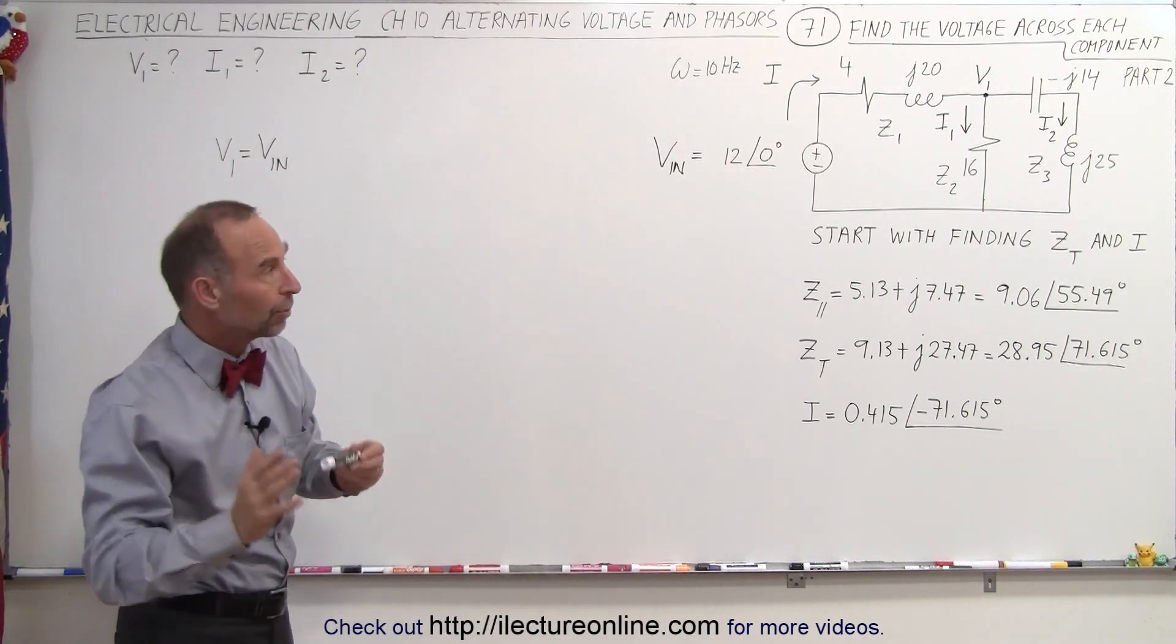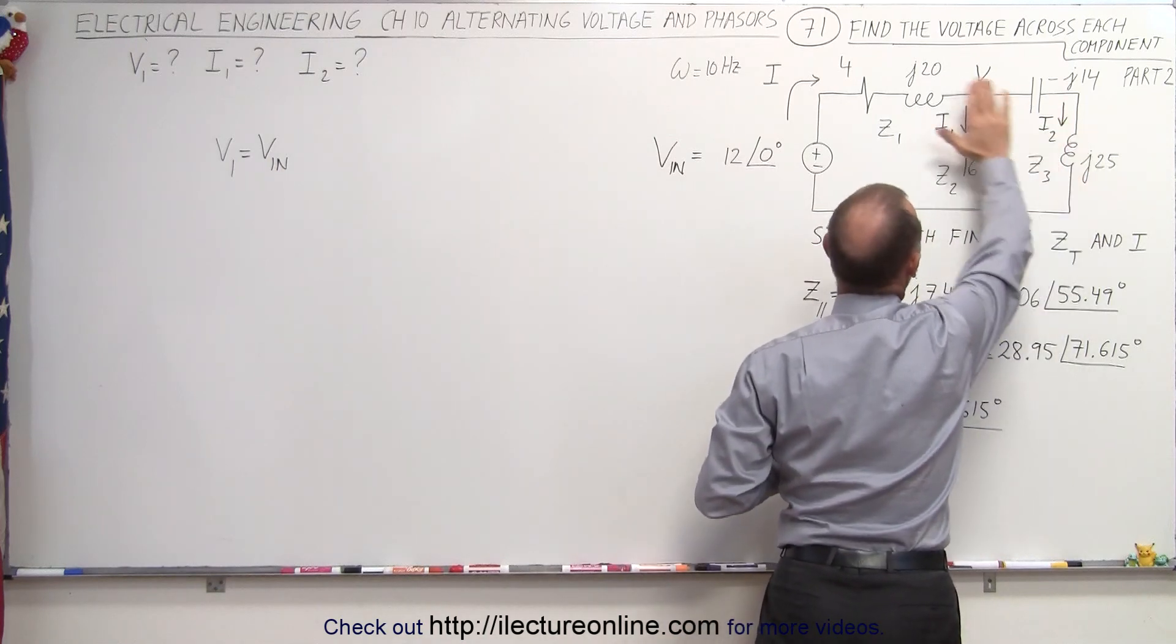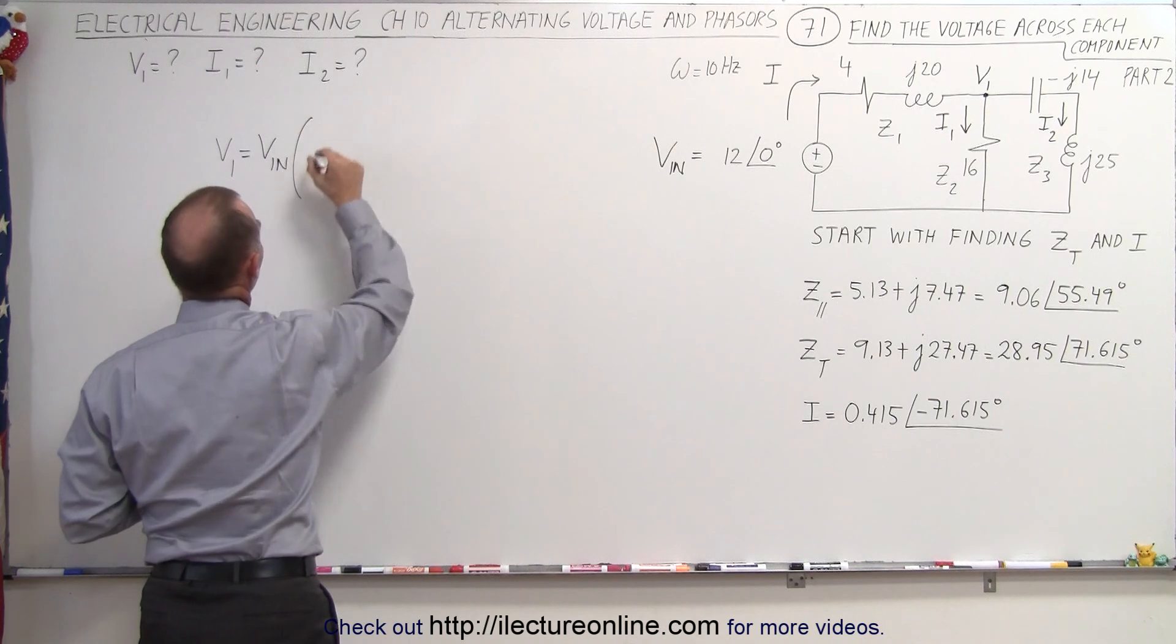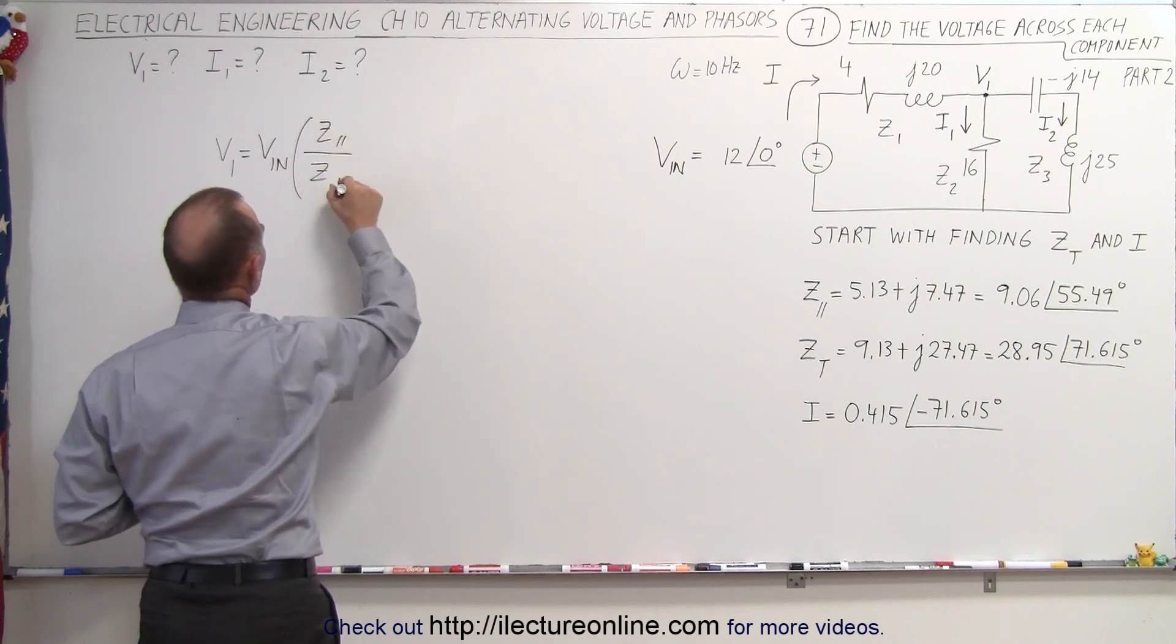and now we're going to multiply that times the impedance of the parallel branch divided by the total impedance of the circuit. So let's multiply that times the impedance of the parallel branch divided by the total impedance of the circuit.